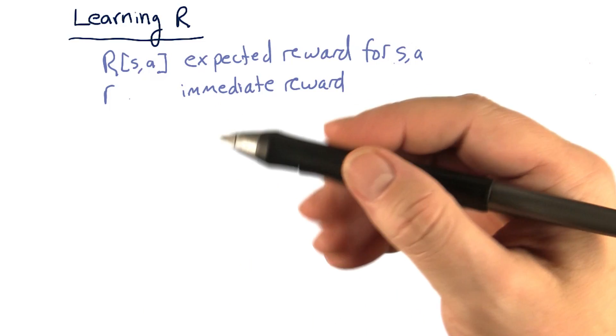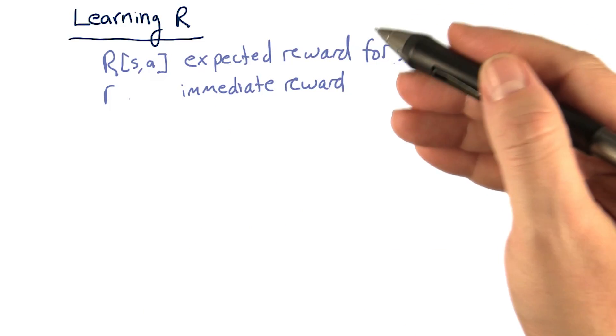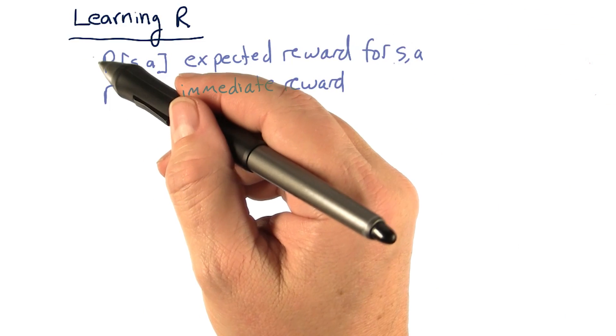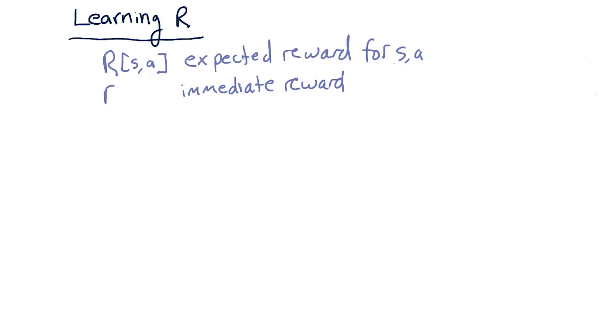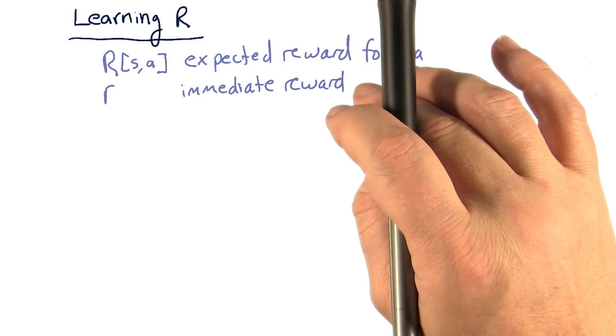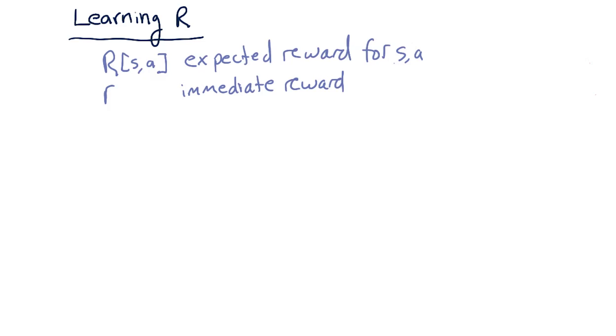Little r is our immediate reward when we experience this in the real world. So big R is our model, little r is what we get in an experience tuple. So we want to update this model every time we have a real experience.